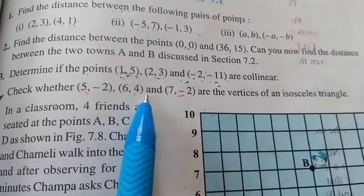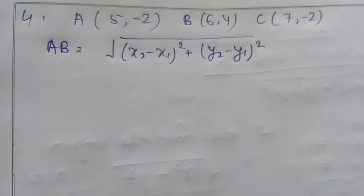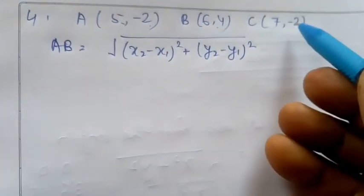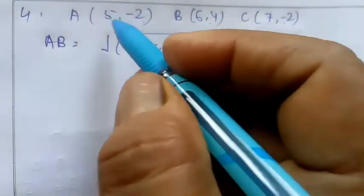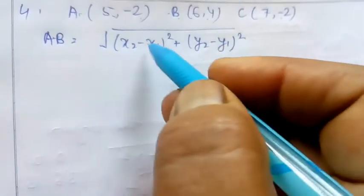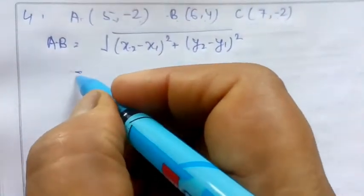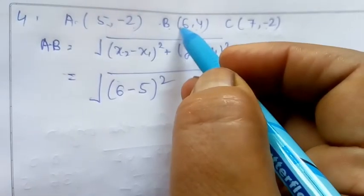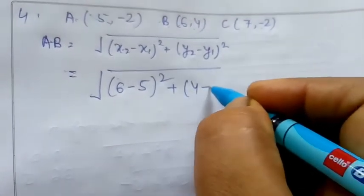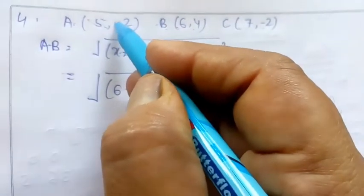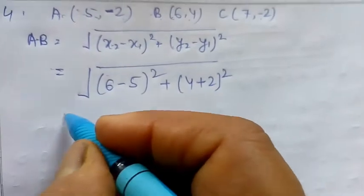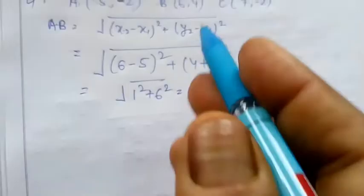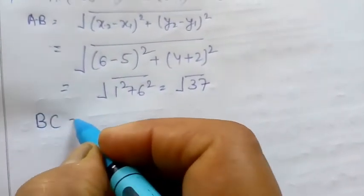Question number 4: check whether points 5, minus 2 and 6, 4 and 7, minus 2 are the vertices of an isosceles triangle. The three points are A(5, minus 2), B(6, 4), and C(7, minus 2). Finding distance AB using the formula: (x2 minus x1) whole square plus (y2 minus y1) whole square gives (6 minus 5) whole square plus (4 minus minus 2) whole square, which is 1 squared plus 6 squared, equaling under root 37.